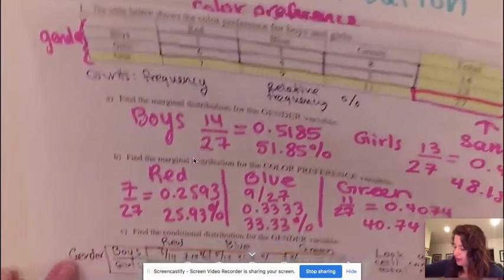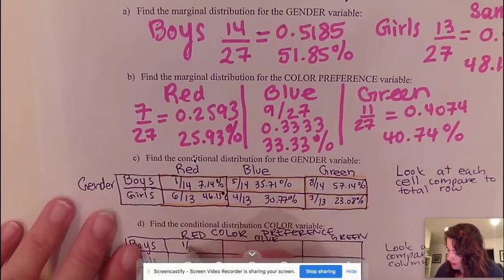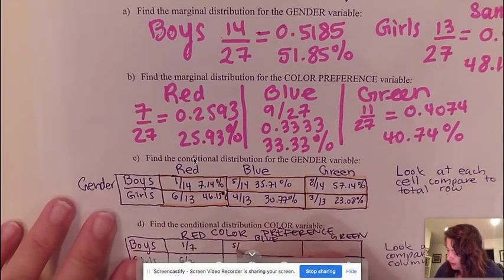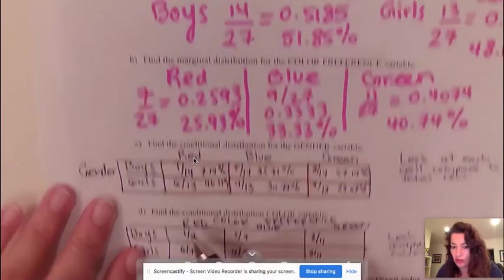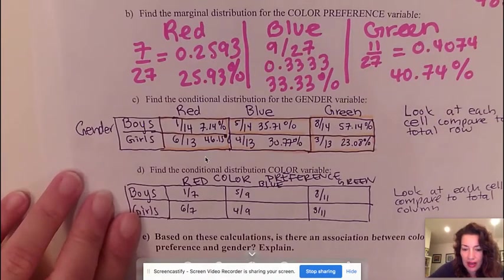So rewriting that here, I'm going to have 1 out of 7, 6 out of 7, 5 out of 9, 4 out of 9, 8 out of 11 and 3 out of 11. So that when you look down, you can see that your total adds up to 100%.